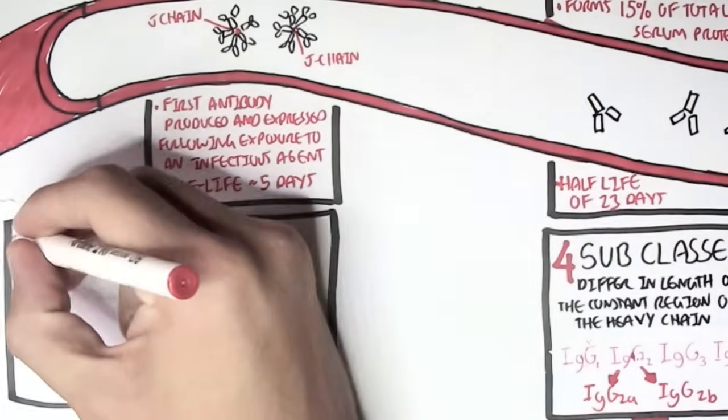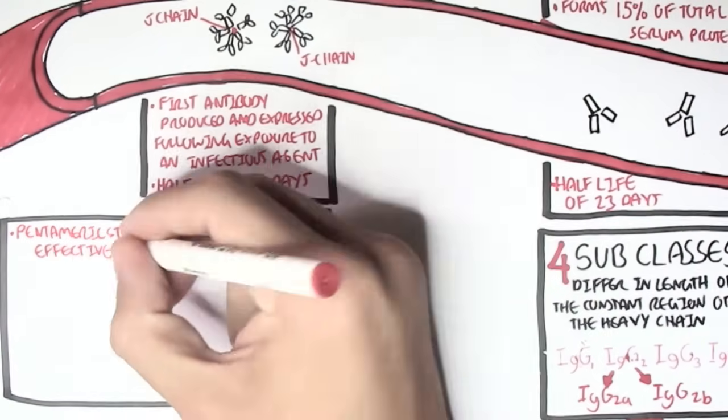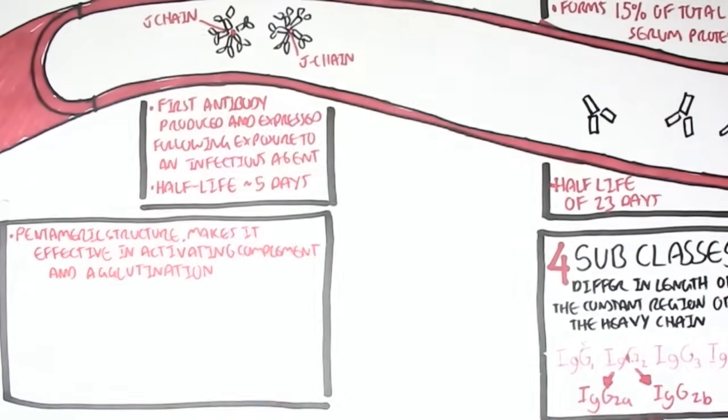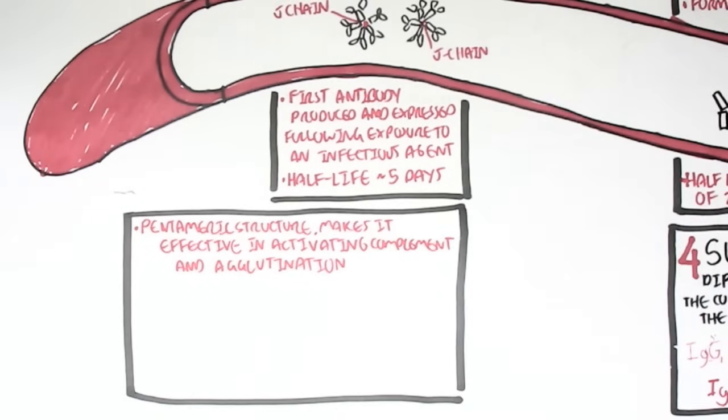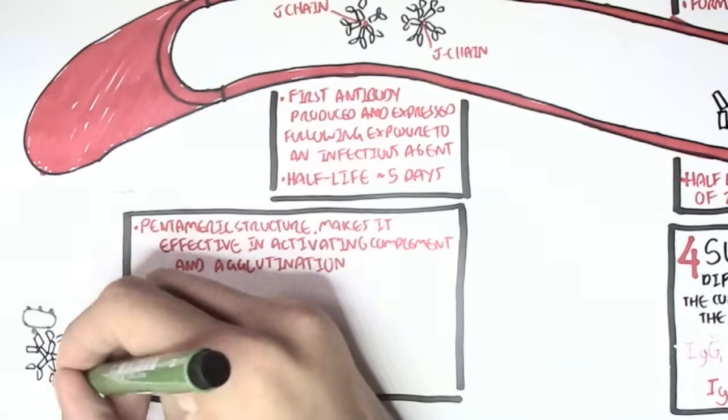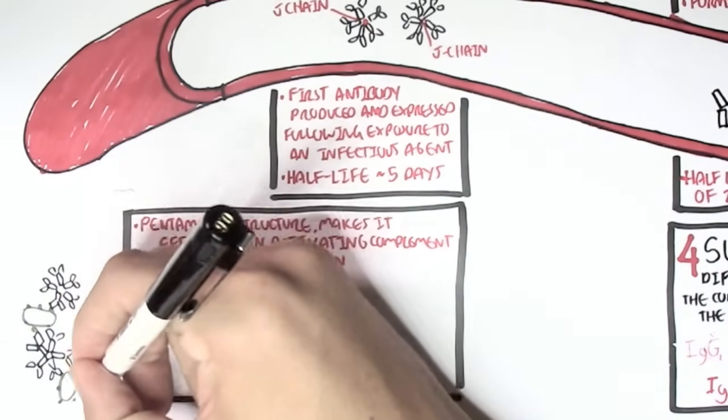Because of IgM's pentameric structure, it makes it effective in activating complement and agglutination, activating complement as in activating the classical pathway of complement. And agglutination, essentially, here we have a lot of bacteria. The IgM can form precipitates, basically forming clumps of it together.